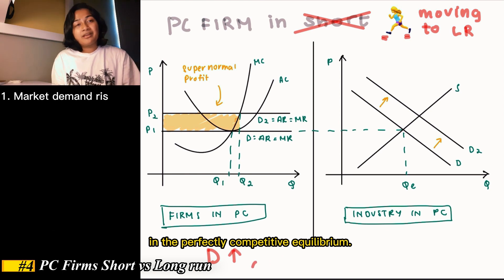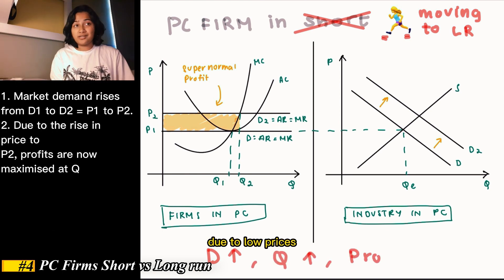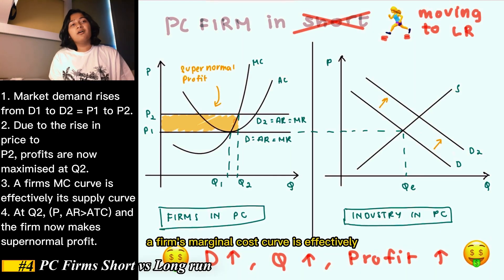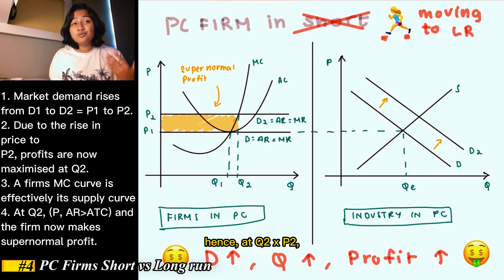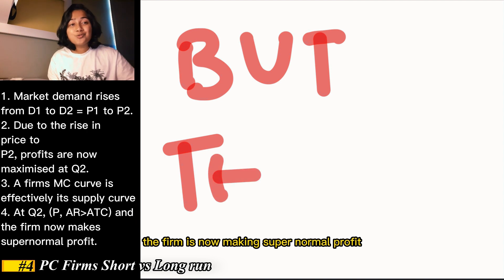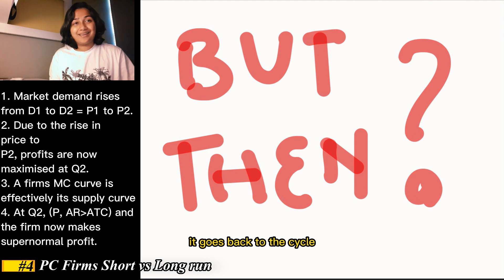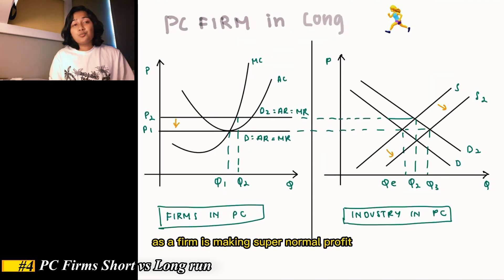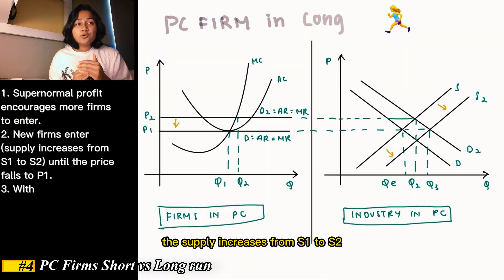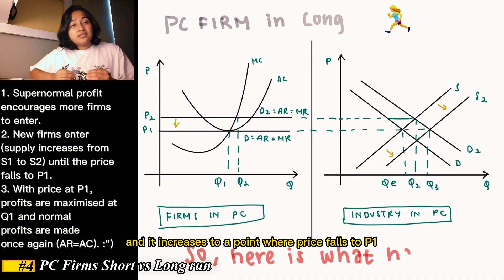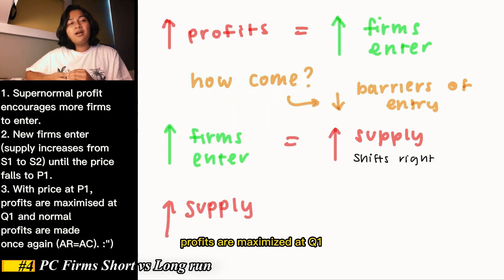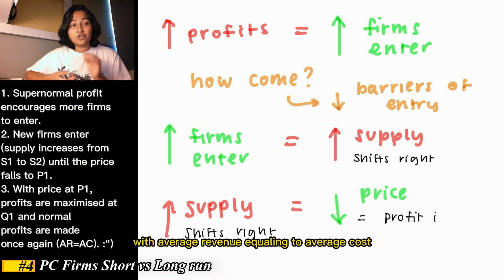However, there are changes in the perfectly competitive equilibrium. Market demand starts to rise from D1 to D2 due to low prices, causing prices to rise from P1 to P2. Due to the rise in price to P2, profits are now maximized at quantity level Q2. A firm's marginal cost curve is effectively its supply curve. At Q2, average revenue is greater than average cost, so the firm is now making supernormal profit. Hence, in the long run, it goes back to the cycle: as the firm is making supernormal profit, it encourages and attracts more firms to enter the market. New firms enter, supply increases from S1 to S2, output increases, and price falls back to P1, because if output increases, price decreases. With price at P1, profits are maximized at Q1 and normal profits are made once again, with average revenue equaling average cost — break even.